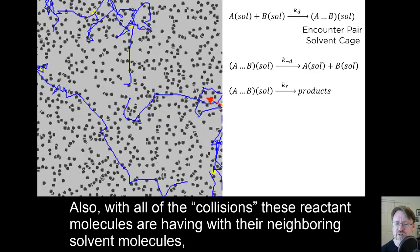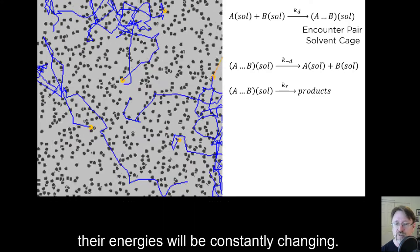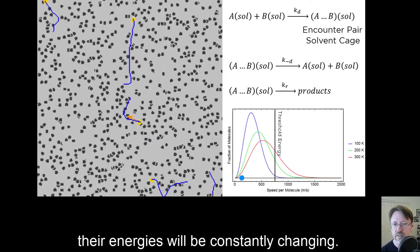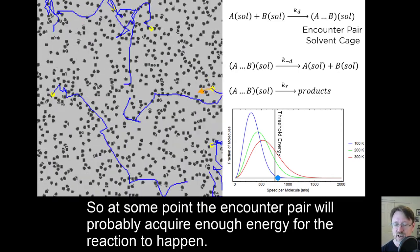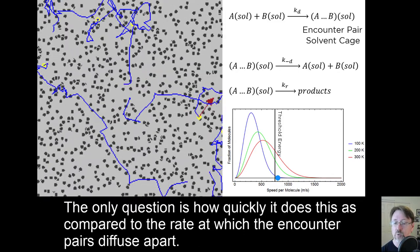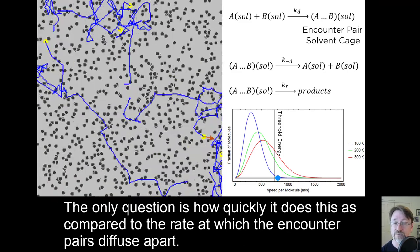Also, with all of these collisions these reacting molecules are having with their neighboring solvent molecules, their energies will be constantly changing. So, at some point, the encounter pair will probably acquire enough energy for the reaction to happen. The only question is how quickly it does this as compared to the rate at which the encounter pairs diffuse apart.